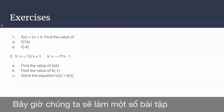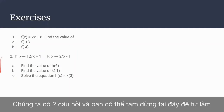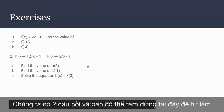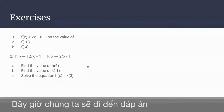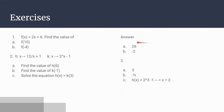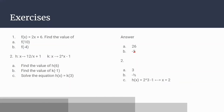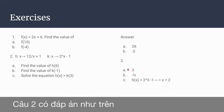Now we'll go to some exercises. This is question 1 and this is question 2. You can pause if you want to do it by yourself. Now for the answers: in question 1a you get 26, and in question 1b you get minus 2. In question 2, 2a is 3 and 2b is minus a half.